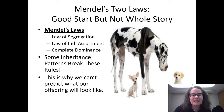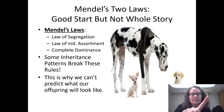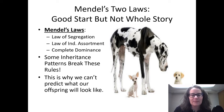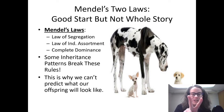Mendel studied something called complete dominance. Complete dominance is where you have two allele options for every trait — one dominant allele and one recessive allele. In order to show the dominant trait, you need at least one dominant allele. In order to show the recessive trait, you have to have two copies of the recessive allele.